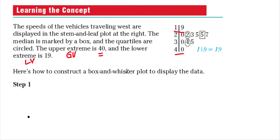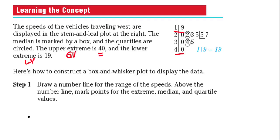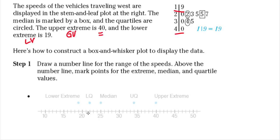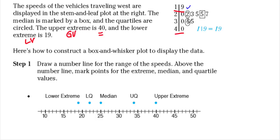Here's how to construct the box and whisker plot. Step one: draw a number line for the range of the speeds. Above the number line, mark points for the extremes, median, and quartile values. On our number line we mark our median, which is 25, our upper quartile, which is 34, and our lower quartile, which is 22. Our upper extreme is 40 and our lower extreme is 19.